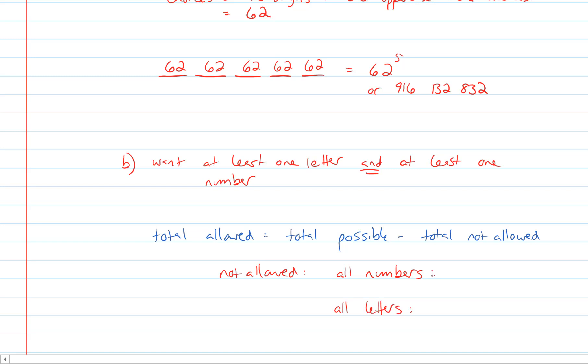Now with all numbers, you'd have five slots and ten choices for each slot for a total of ten to the five. For all letters, because it's case sensitive, then rather than 26 choices, you're going to have 52. Because as we said, a lowercase and uppercase are considered different. And again, there's five slots, so you're going to have 52 to the five.